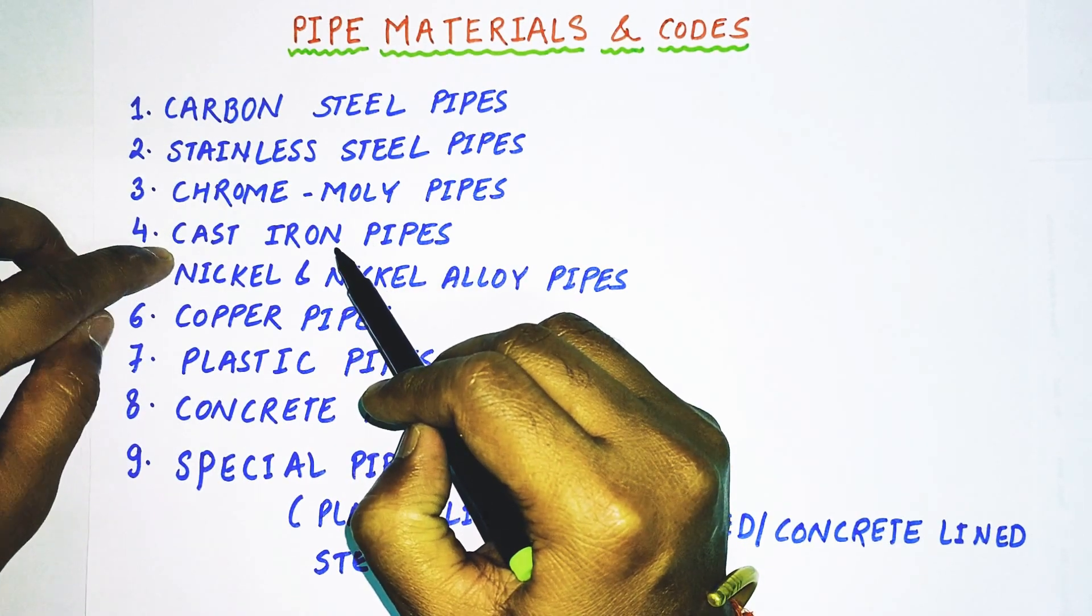Now after chrome molly pipe we have cast iron pipes. Cast iron pipes are very popular in the industry and these are used in fire protection systems, drains, sewage lines, and heavy loads.